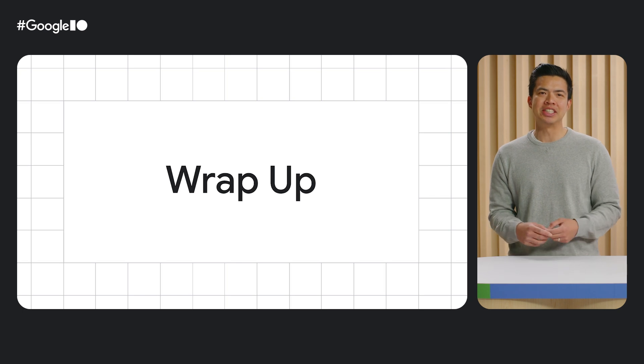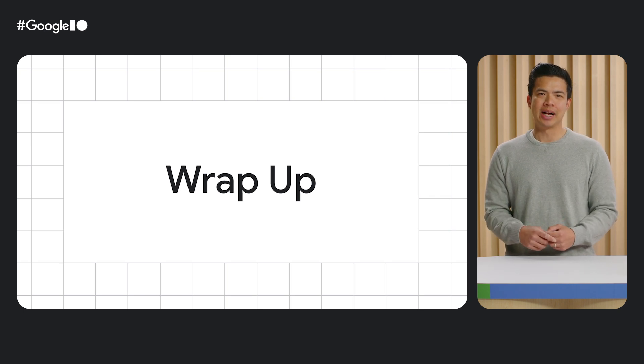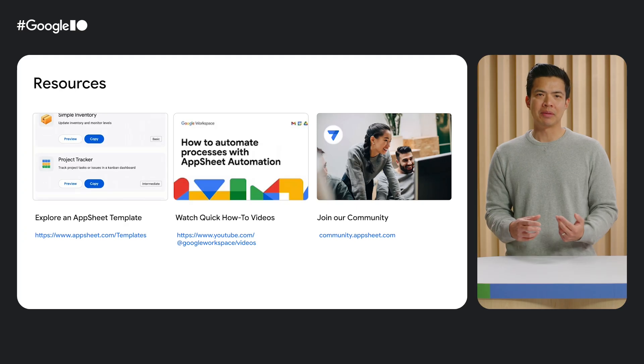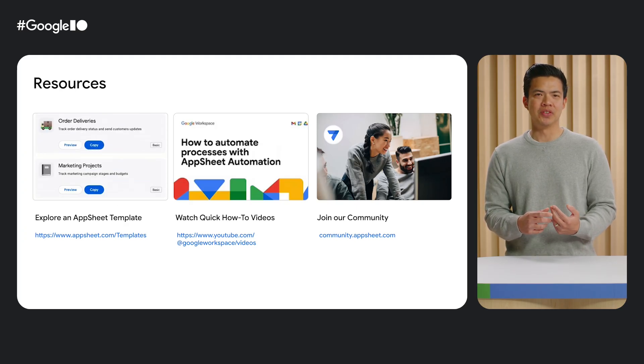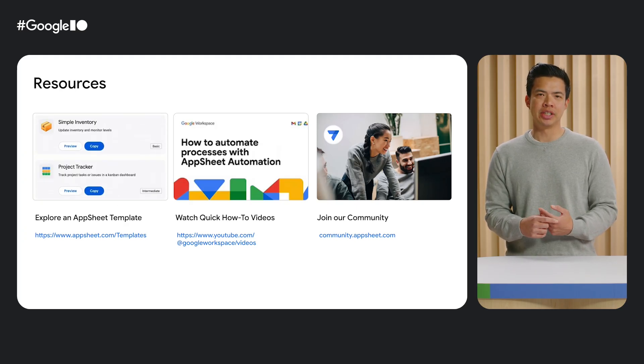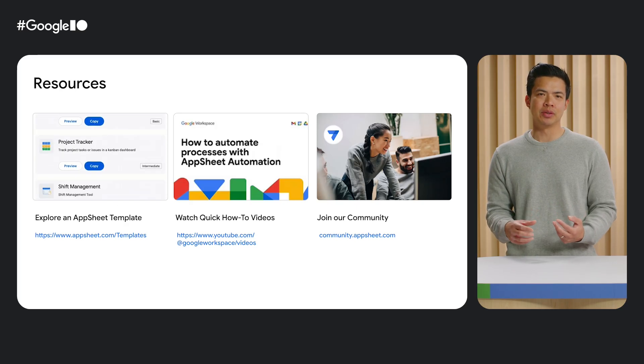AppSheet enables your business users to save time with apps and automation. It allows you to build intelligent solutions connecting to cloud AI technologies. To wrap up, here's some information about how to use AppSheet and try out the features we highlighted — explore an AppSheet template, watch quick how-to videos, or join our active community to see what others are building. Thanks for checking out today's session, and we hope you enjoy the rest of Google I/O 2025.